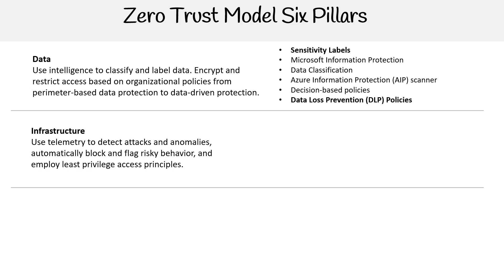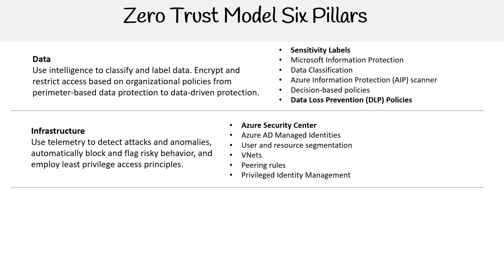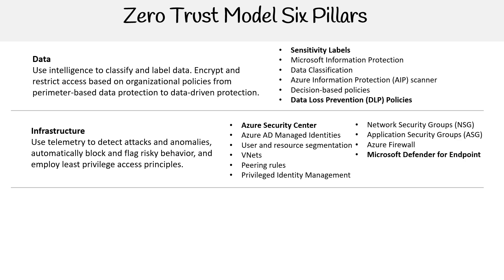Next, we have infrastructure. Use telemetry to detect attacks and anomalies, automatically block and flag risky behaviors, and employ least privilege access principles. Here we can use the Azure Security Center, Azure AD managed identities, user and resource segmentation, VNets, tiering rules, privileged identity management, network security groups, application security groups, Azure Firewall, Microsoft Defender for Endpoint, Microsoft Defender for Identity, and Azure Sentinel. These last three we'll be talking about in greater detail.